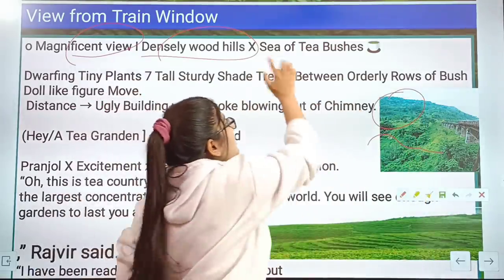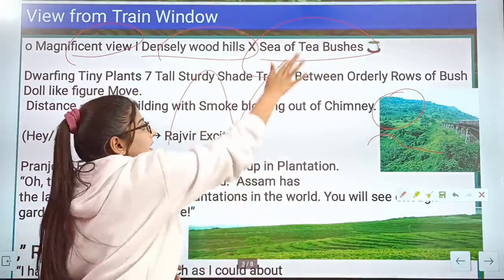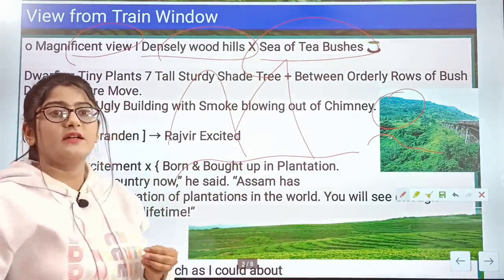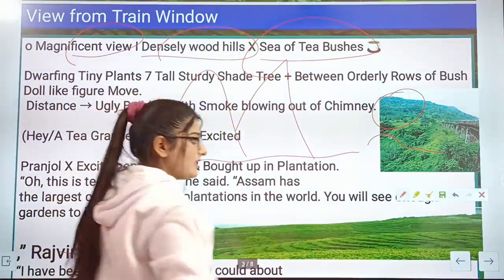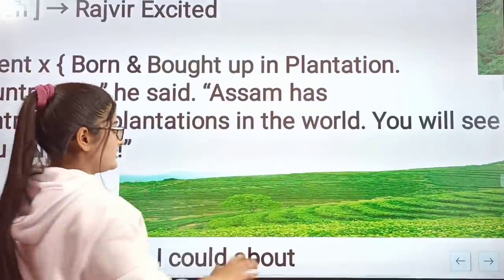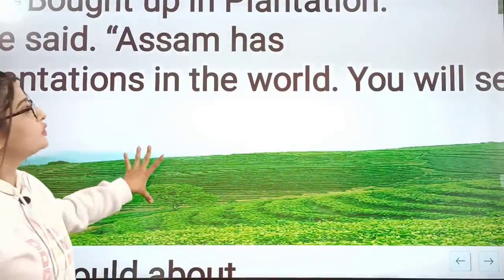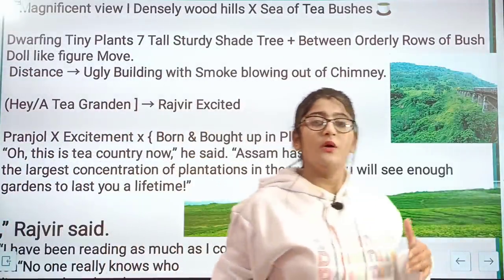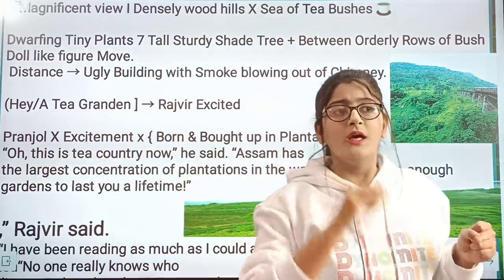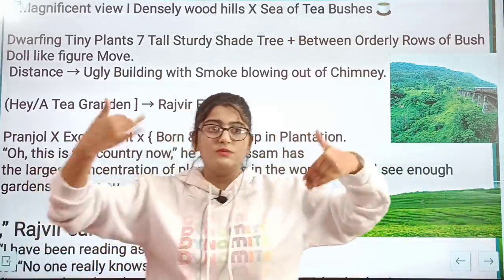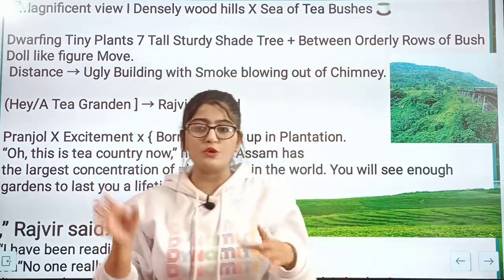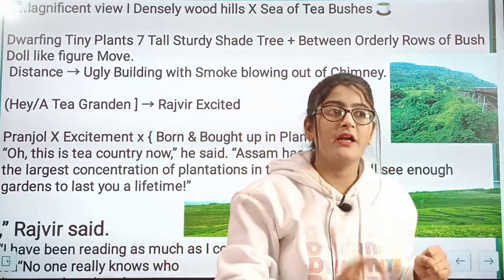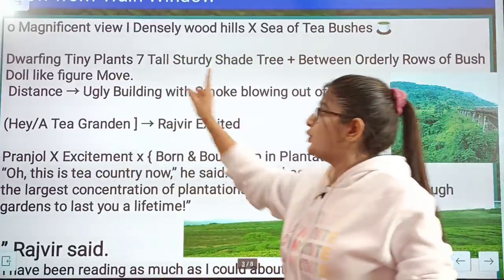What was below the hills? Below the hills were tea bushes. Behind the tea bushes were big trees placed to provide shade. The tea plants are dwarf and tiny, while the shade trees are tall and sturdy. This is called dwarfing — the big shade trees keep the tea bushes small. The tea plants look beautiful and green. This line is given in the book — 'Dwarf and tiny tea plants, tall sturdy shade trees.'